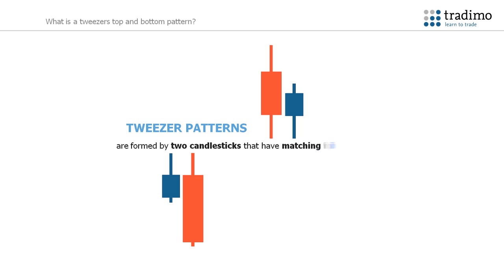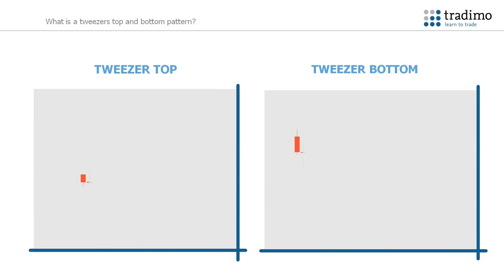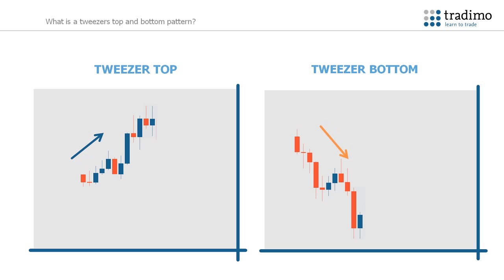Tweezer patterns are formed by two candlesticks that have matching highs or lows. As the two wicks have the same height, it has the appearance of a pair of tweezers. A discrepancy of a few pips is acceptable. There are two types of tweezer patterns: a tweezer top and a tweezer bottom. As with the engulfing candle patterns, there has to be an up or downtrend preceding the pattern — the market must not be ranging.